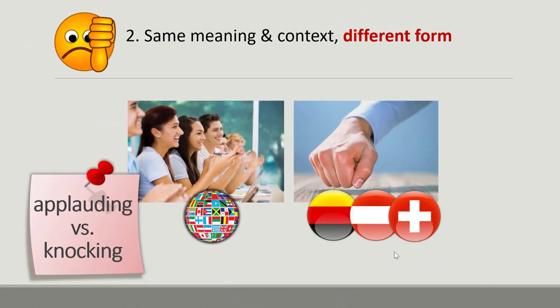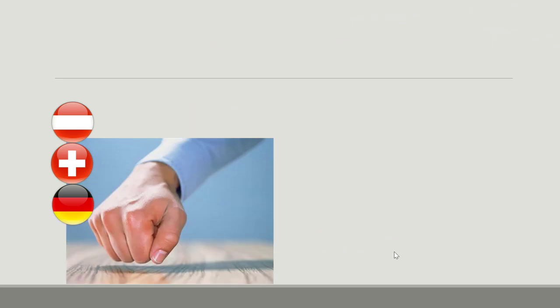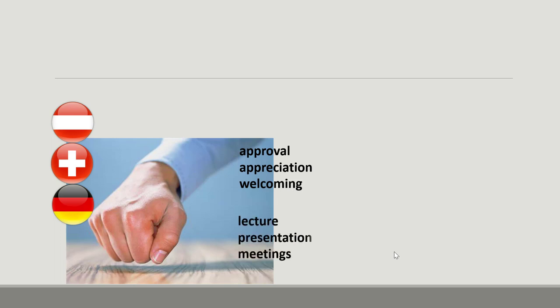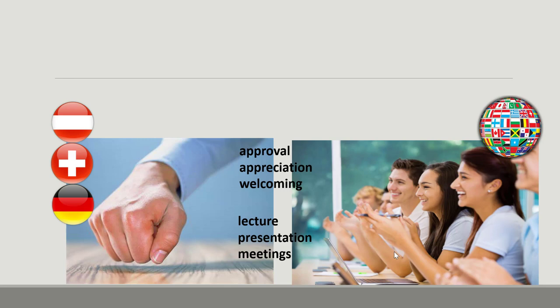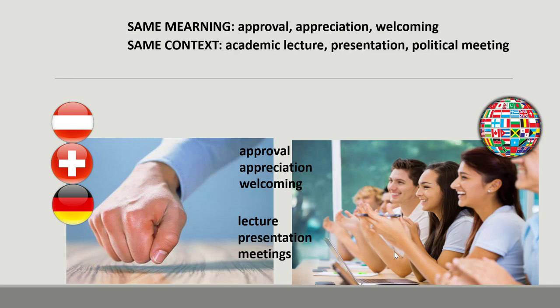The next type of cultural misinterpretation — where different forms express the same meaning in the same context — can be illustrated by knocking and applauding. In German-speaking cultures, knocking on the table with one's knuckles is used to express approval, appreciation, or welcome in restricted contexts such as an academic presentation, lecture, or political meeting. Applauding instead of knocking in these cultures could be misunderstood as an attempt to ridicule the lecturer, while in many cultures around the world, applauding is the appropriate form for the same meaning of appreciation and welcoming in academic communication. Knocking may be interpreted as disagreement — same meaning, same context, but different forms.